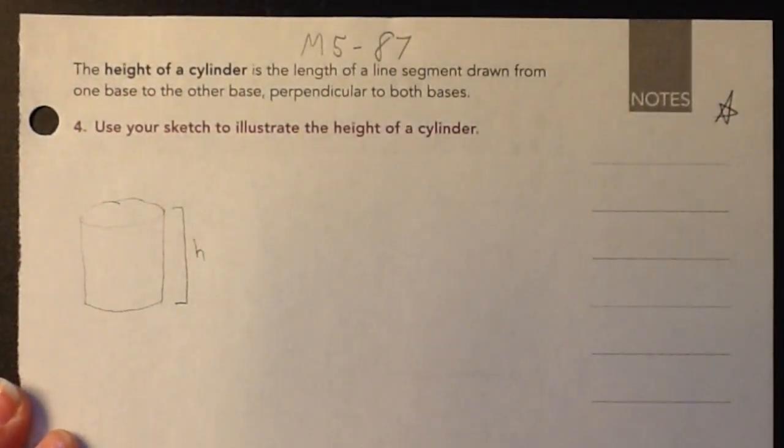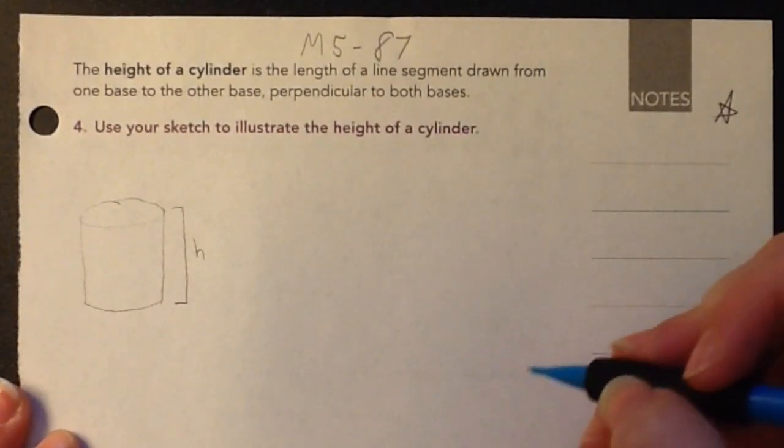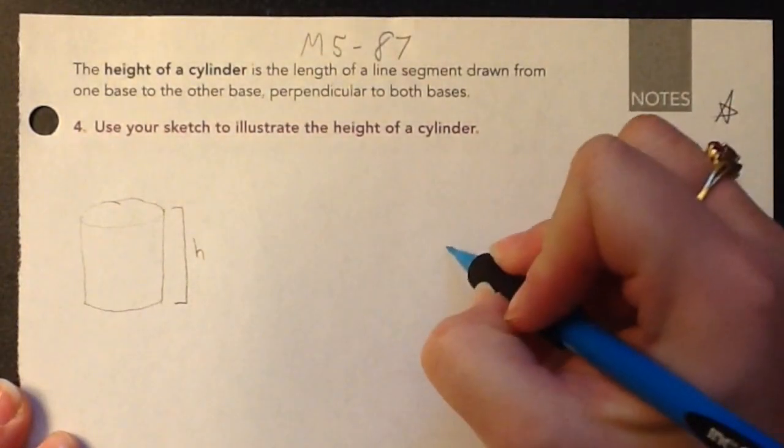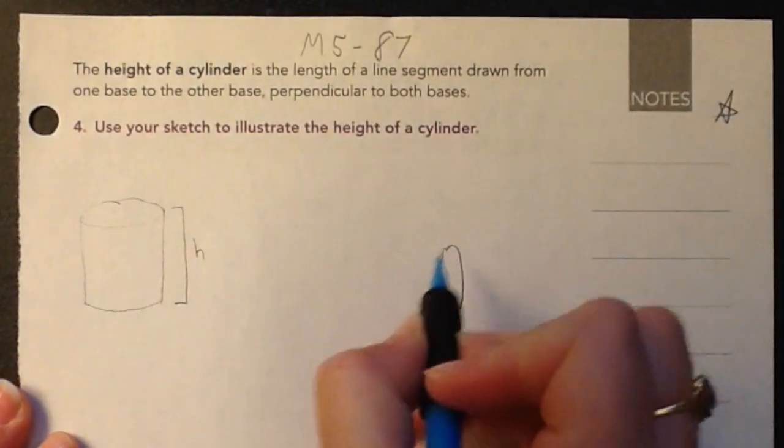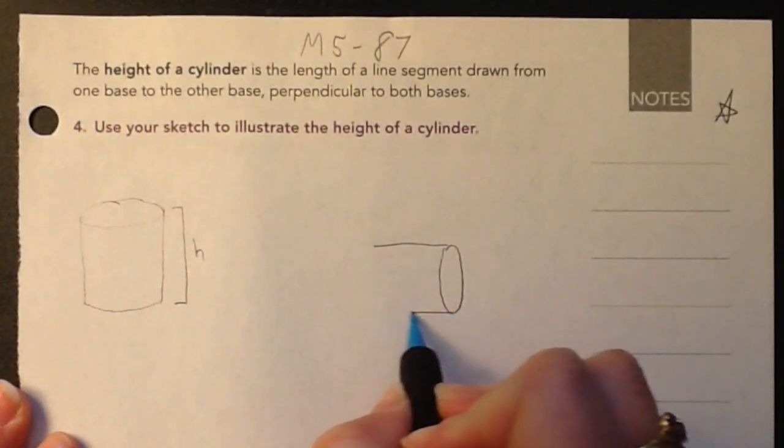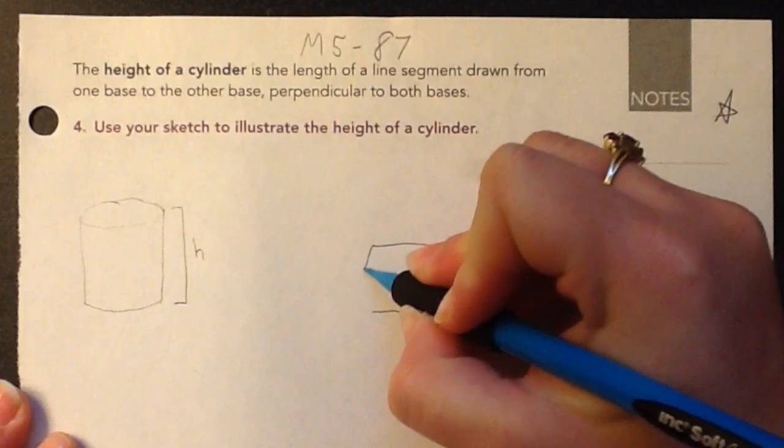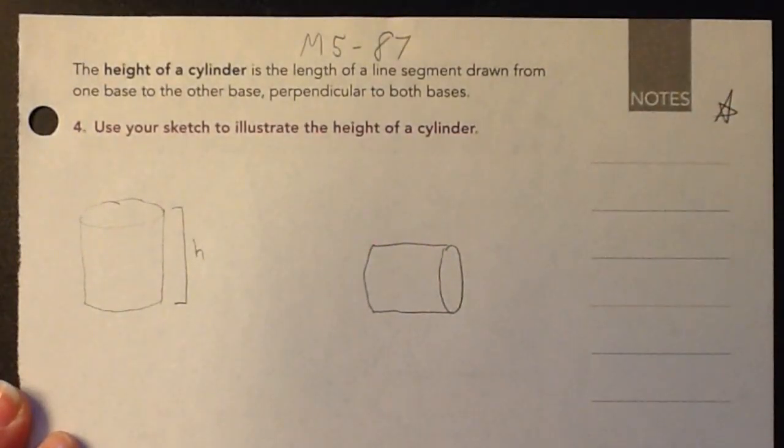However, that might be confusing if it's on its side. So if it was on its side, still draw the circle, lines going off to the side, curved base, something like that.